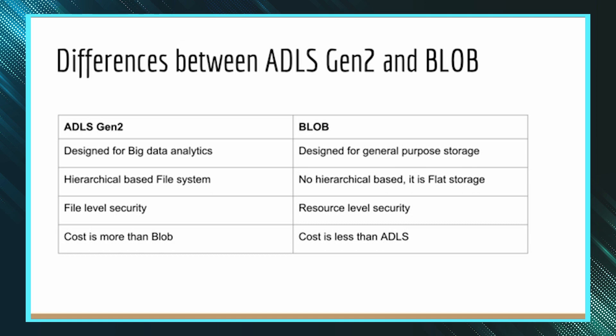ADLS Gen 2 provides a hierarchical file system — just like how you create multiple folders and subfolders on your Windows machine, you can do the same. Blob, on the other hand, is flat storage, though you can create something like a virtual hierarchical structure; physically it remains flat-based storage.